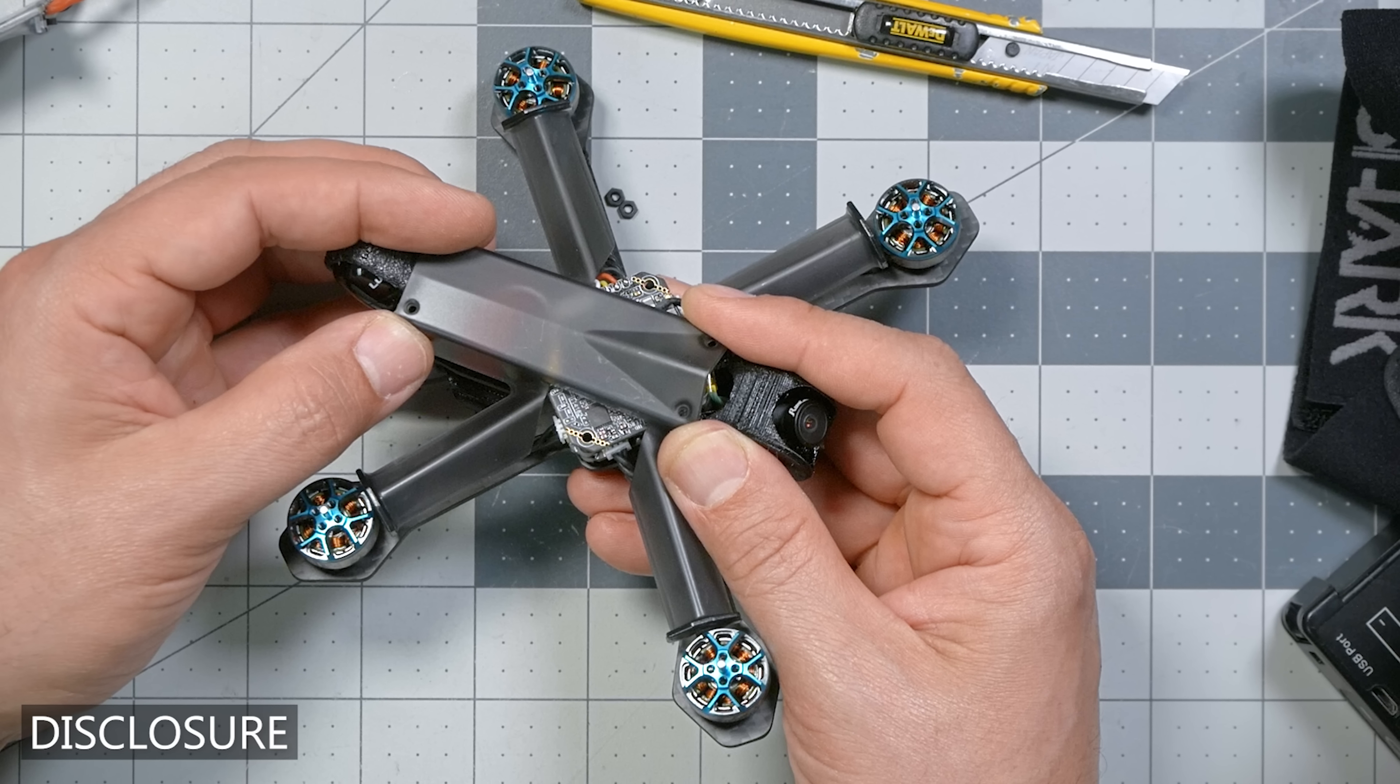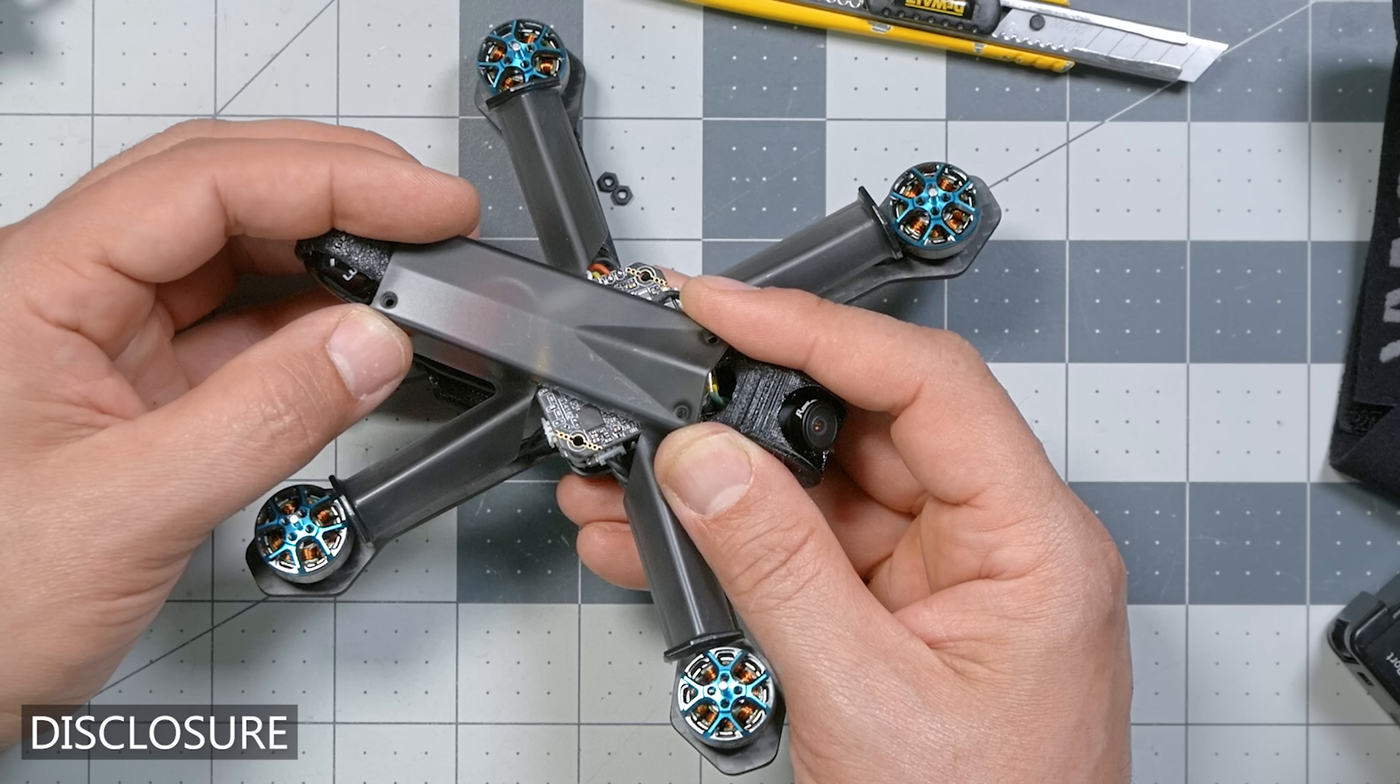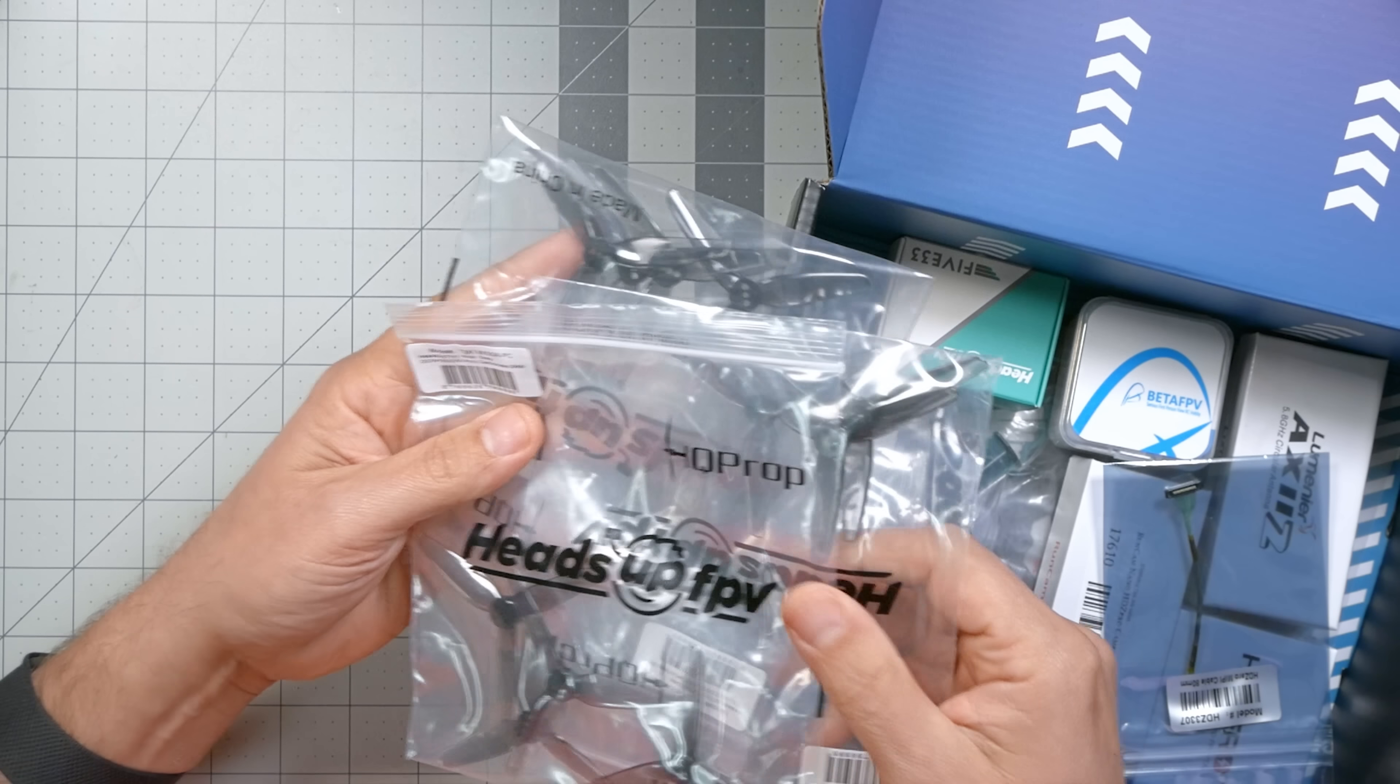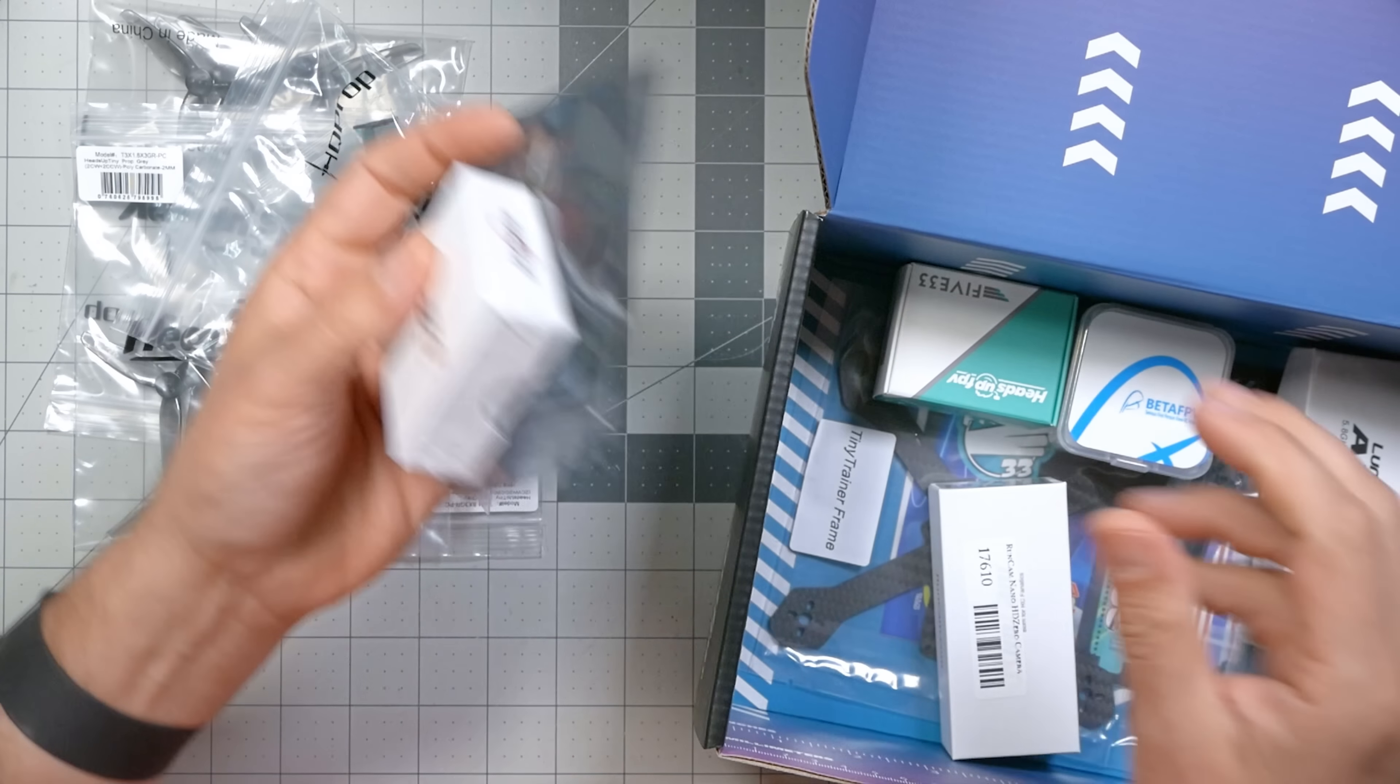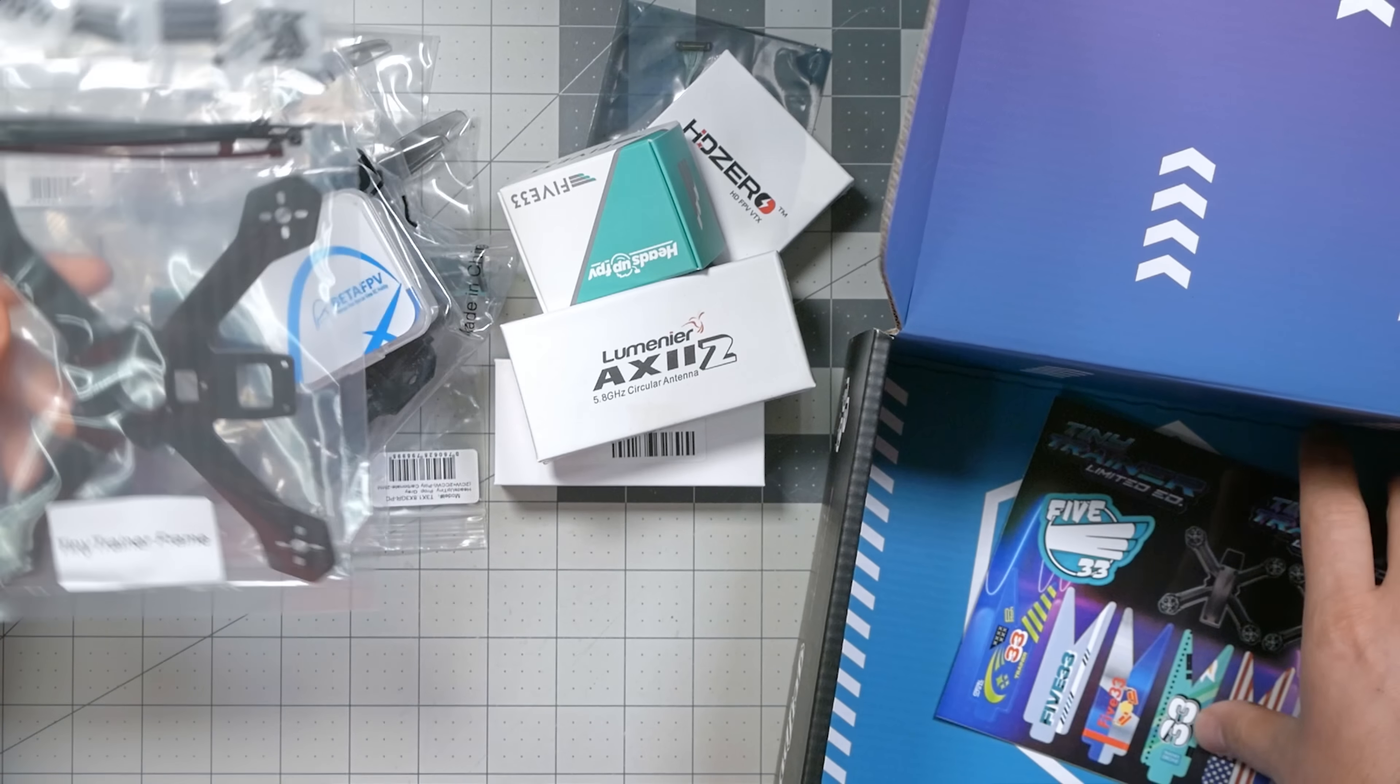The Tiny Trainer that I'm building in this video was sent to me by FPV Crate. I did not purchase it with my own money. There are links down in the video description if you want to pick it up, and they are affiliate links, which means I receive a small commission. Here's what comes in the kit: we've got props, the frame, the HD0 video transmitter, the HD0 camera and antenna, the motors, the flight controller, and some stickers.